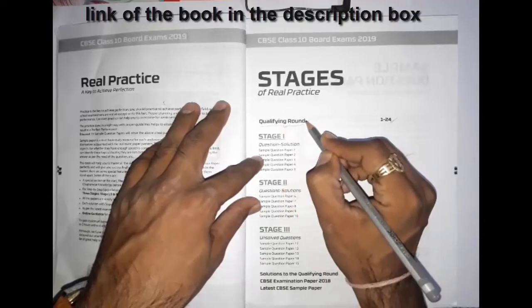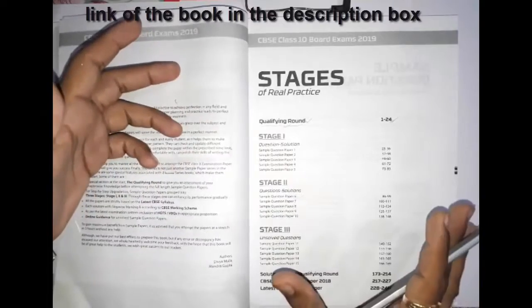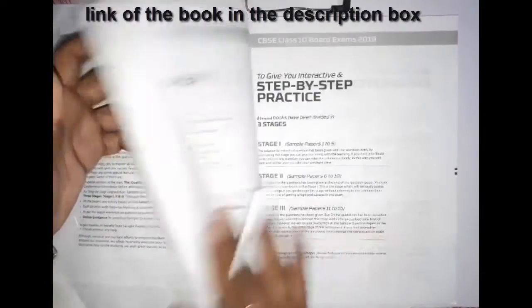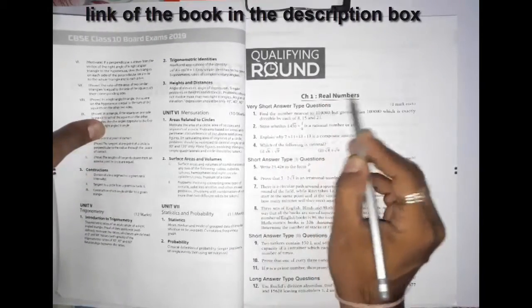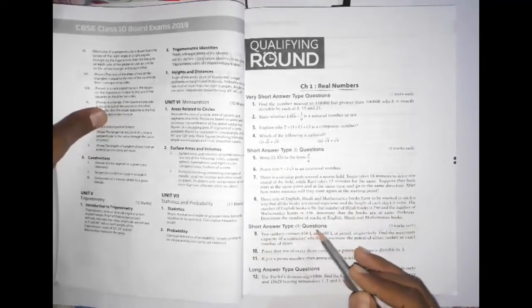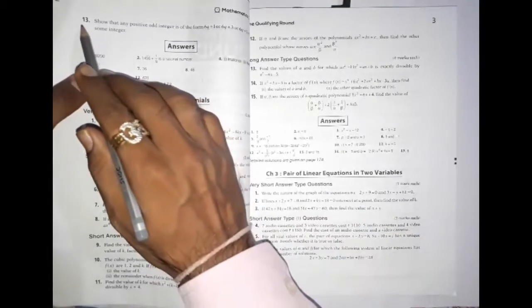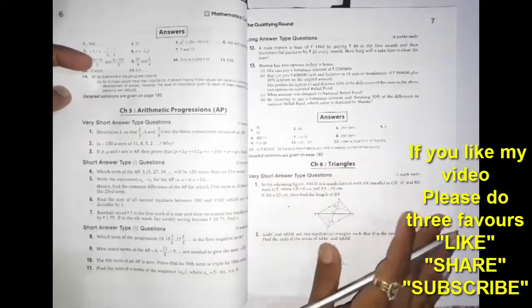What they have done is they have given us a qualifying round. This qualifying round means from each chapter they have selected 15 questions. Look here — from chapter number one, Real Numbers, there are four very short questions, three medium two-mark questions, then a few two-three mark questions, and then long answer questions. So in every chapter they have provided this type of question.